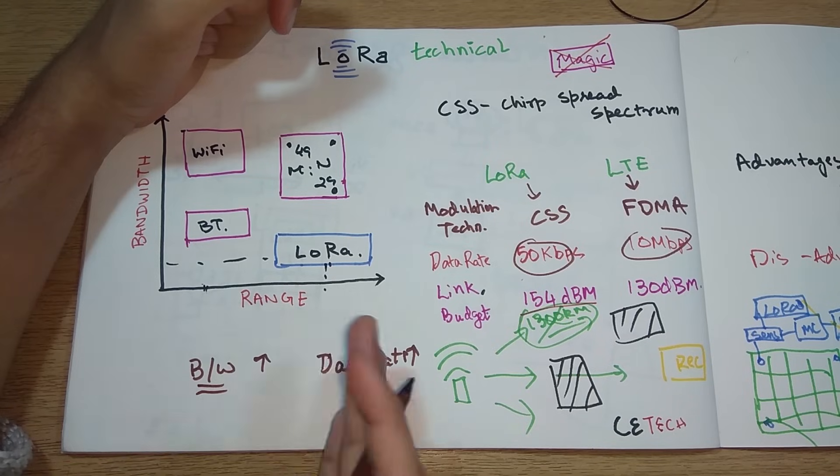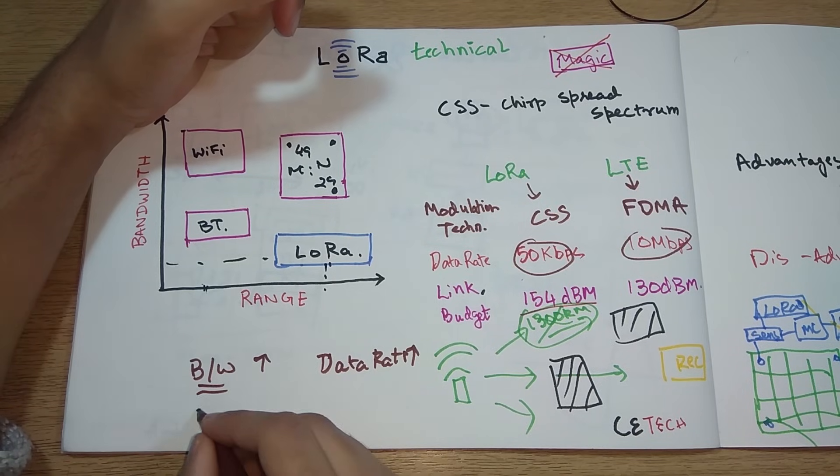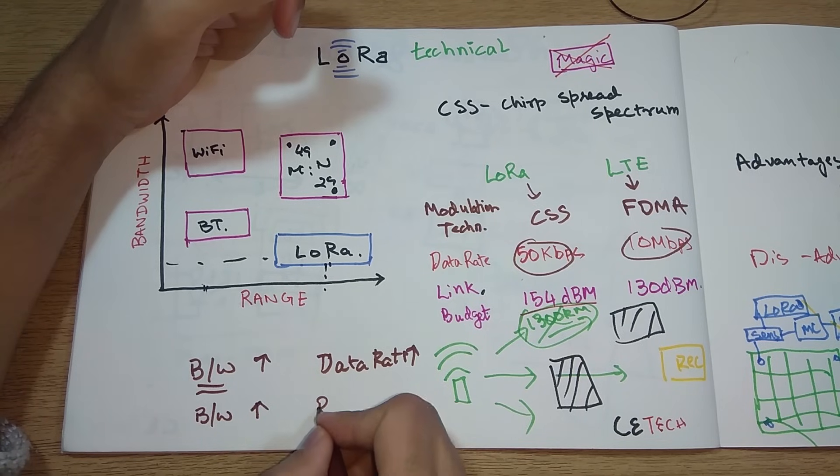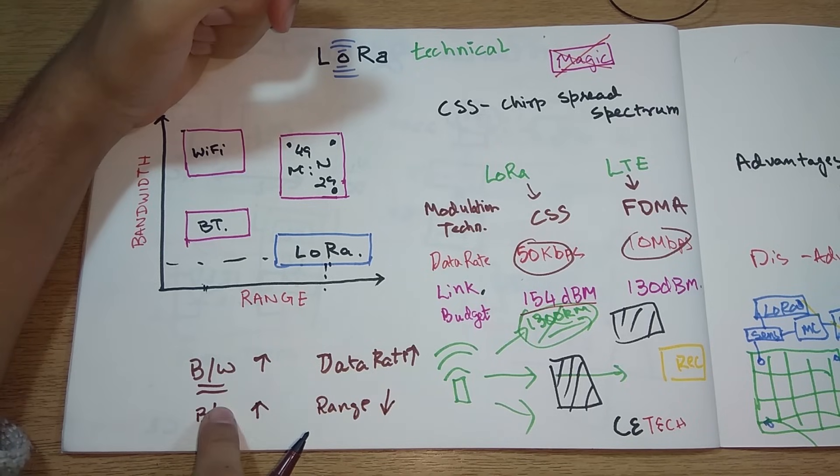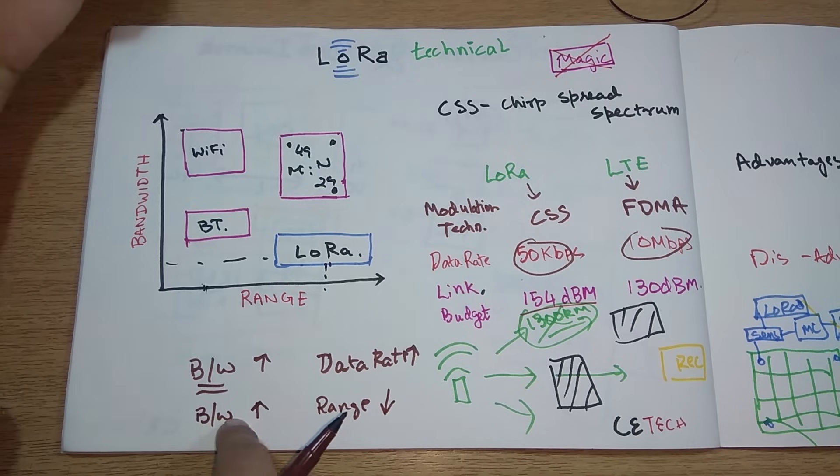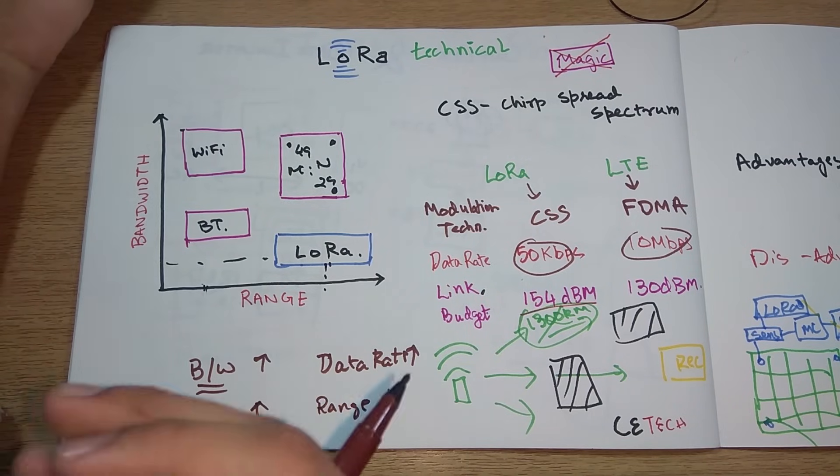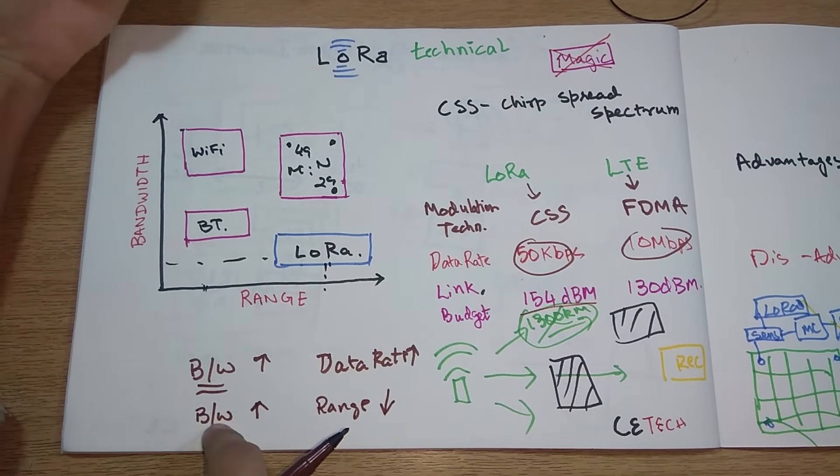In LoRa you can also play with the bandwidth. You can select your bandwidth and according to the bandwidth you can change the range. If you increase your bandwidth, your range decreases. You can select your bandwidth according to your range, but selecting the bandwidth is a special case as you need to see how much data you need to send.